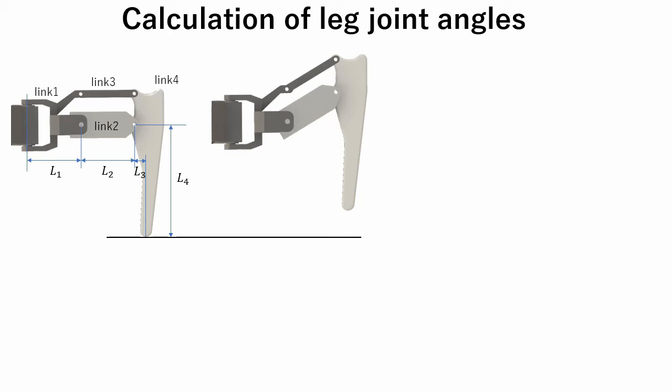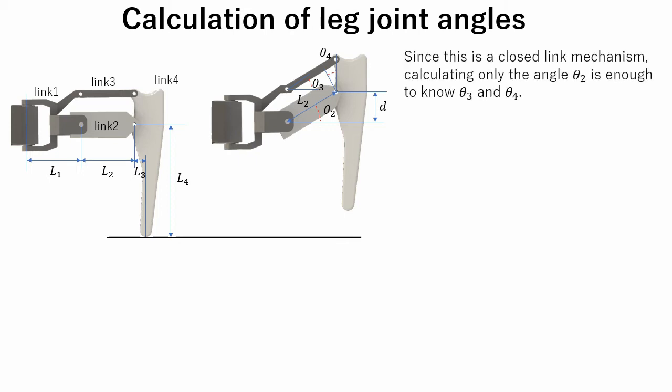This is how the links move when the leg is up. Note that the link 2 and link 3 are always parallel to each other and link 4 is always vertical to the ground. Let's assume that leg moves distance d upwards. Since this is a closed link mechanism, calculating only angle theta 2 is enough to know theta 3 and theta 4.